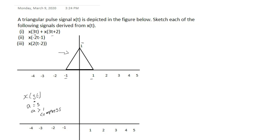We perform compression by dividing the limits — which are minus 1 and 1 — each by 3. So each limit becomes minus 1/3 and 1/3 respectively, thereby compressing our signal. The amplitude remains constant at 1.